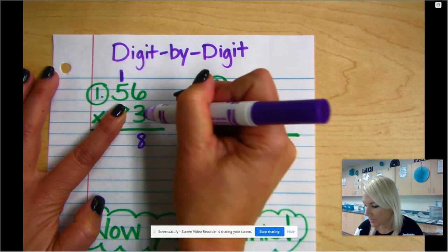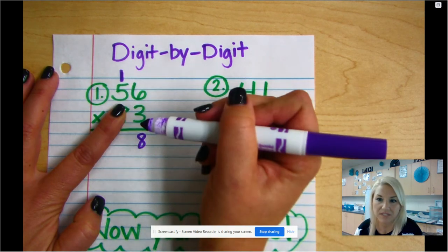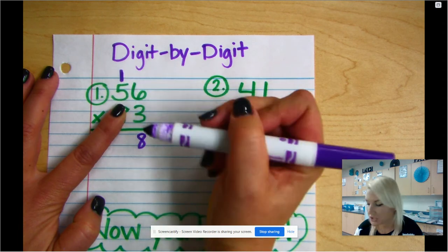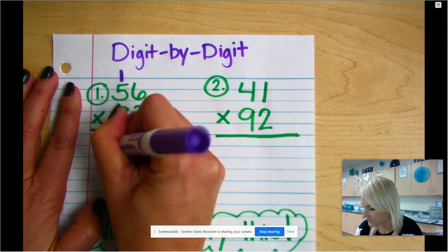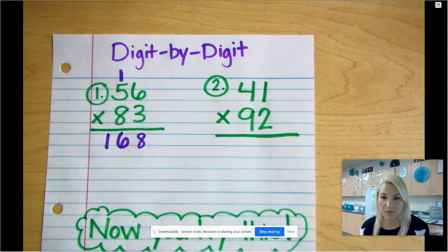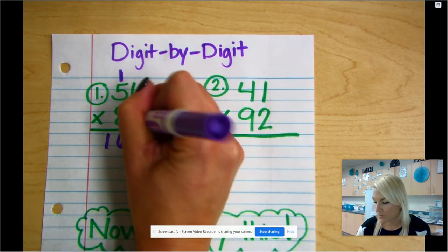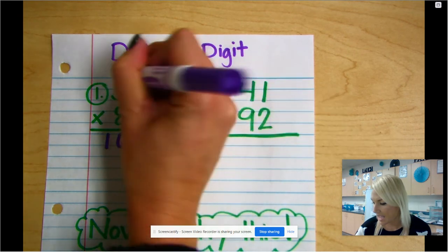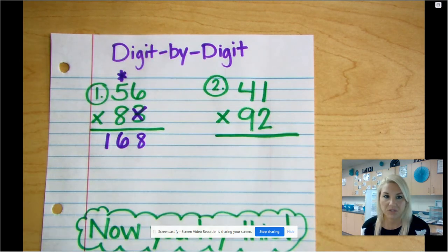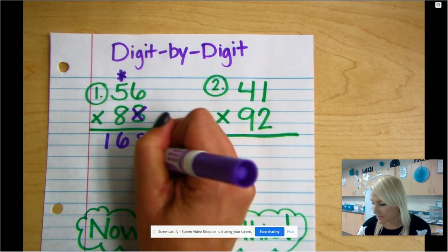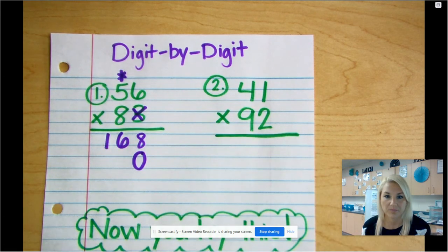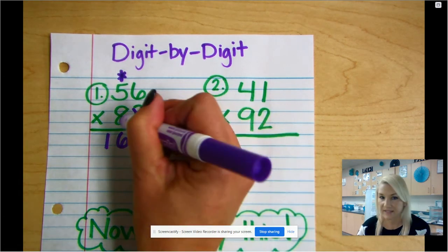Then I'm gonna multiply 3 times 5, which is 15, and I'm gonna add the 1 which gives me 16. And now here's where that new thing is gonna come in, that new rule. We are now done with the ones place and I already added this, so I'm gonna get rid of it. I like to cross it out, and when I do that, when we're done with the ones place, we drop a zero to hold place value and now we move over to the tens place.